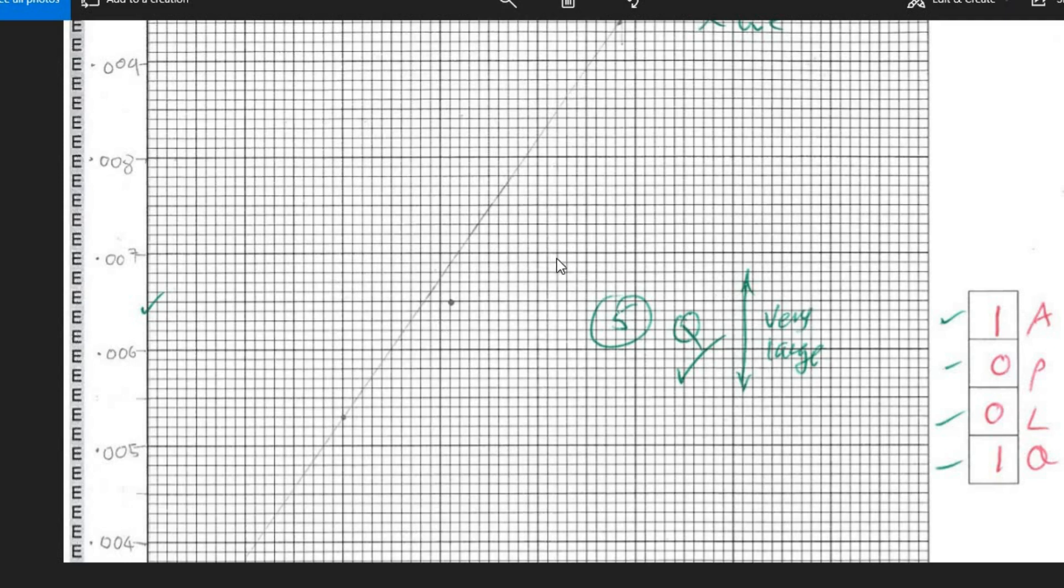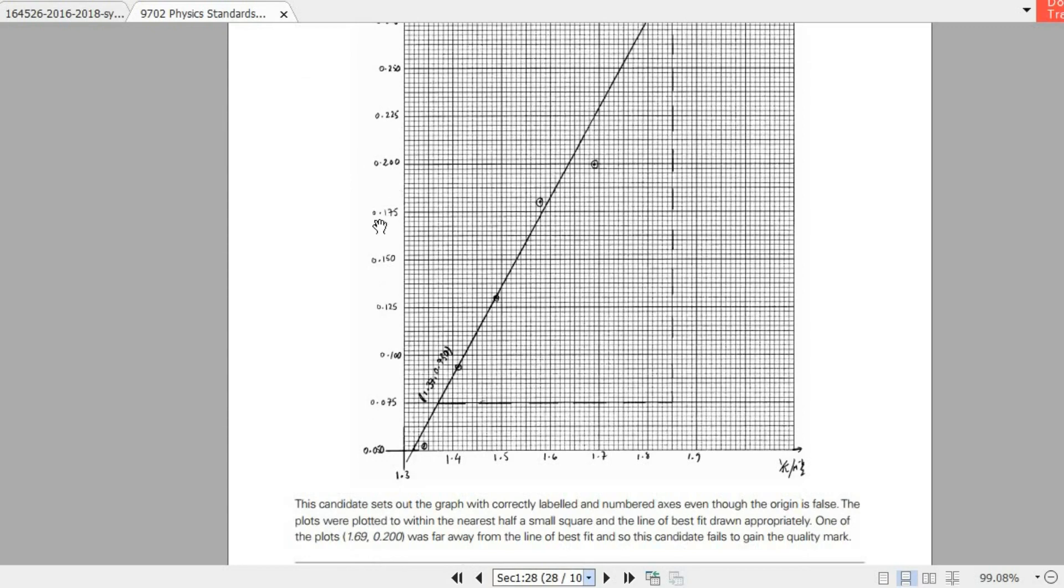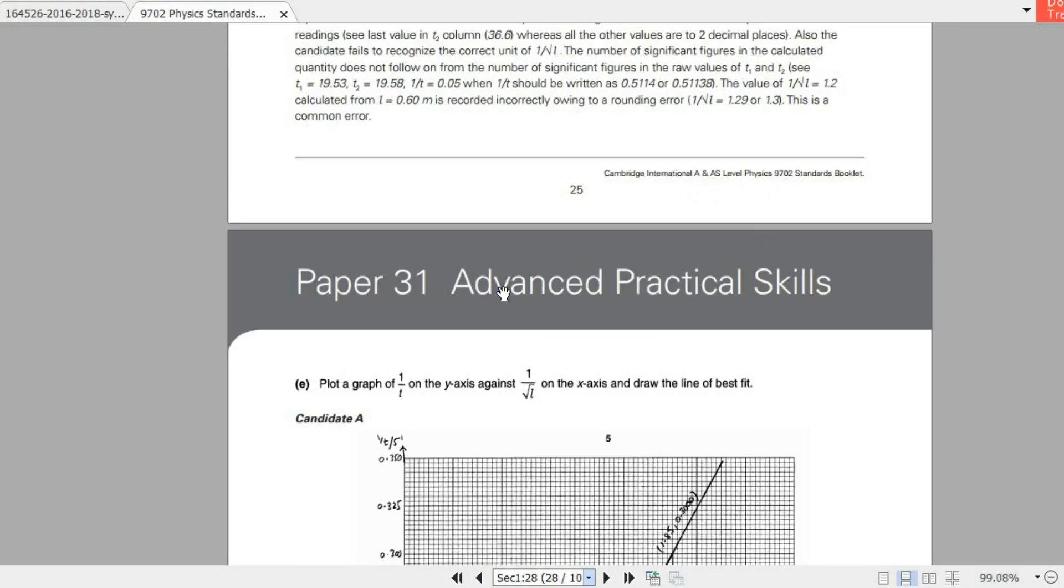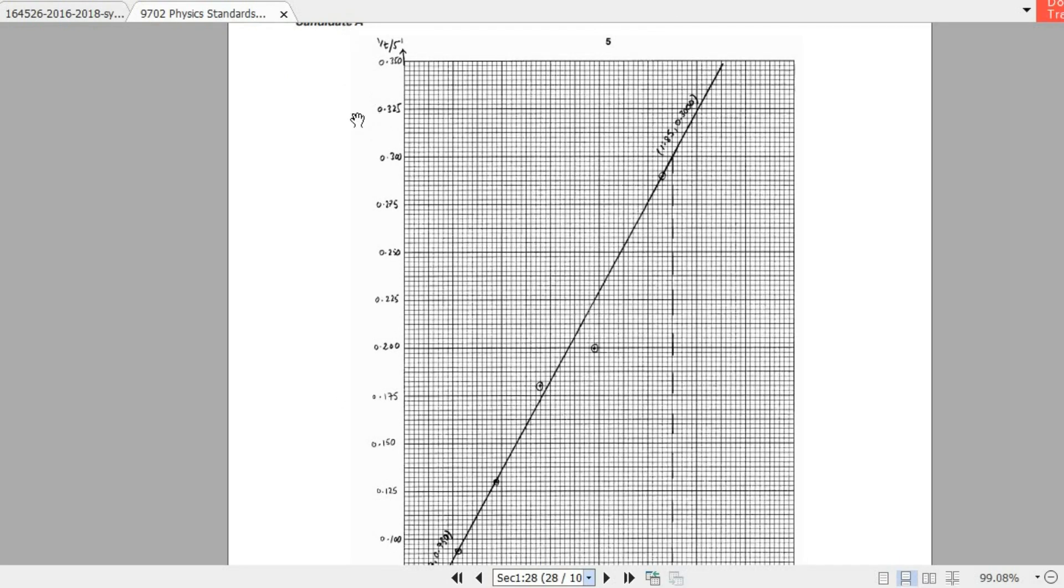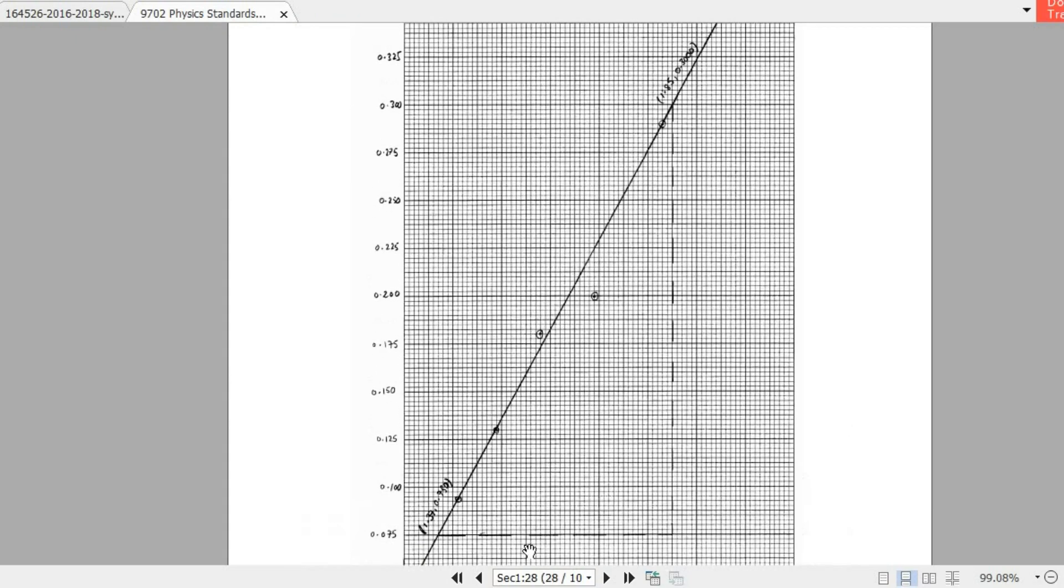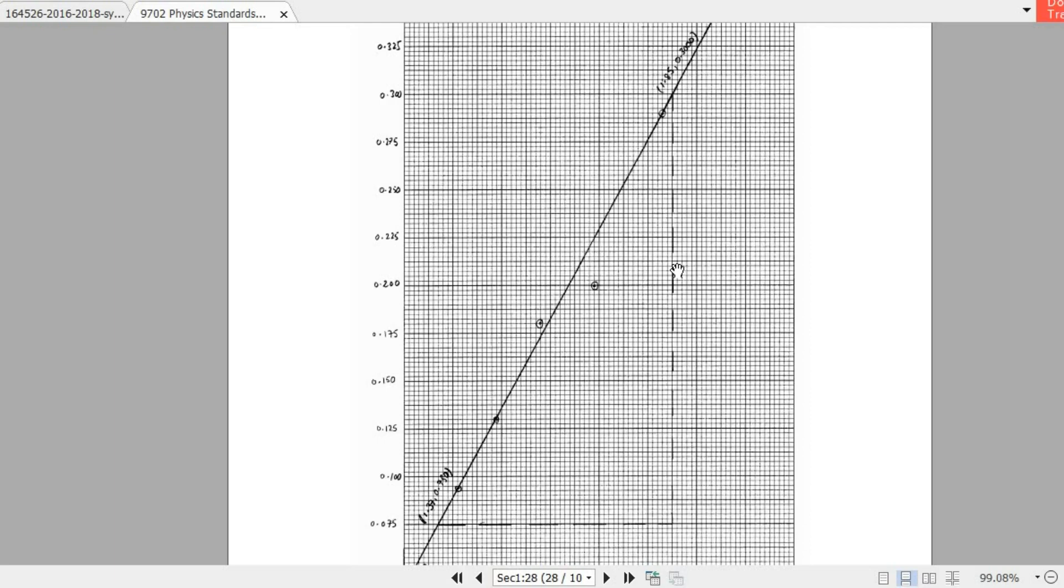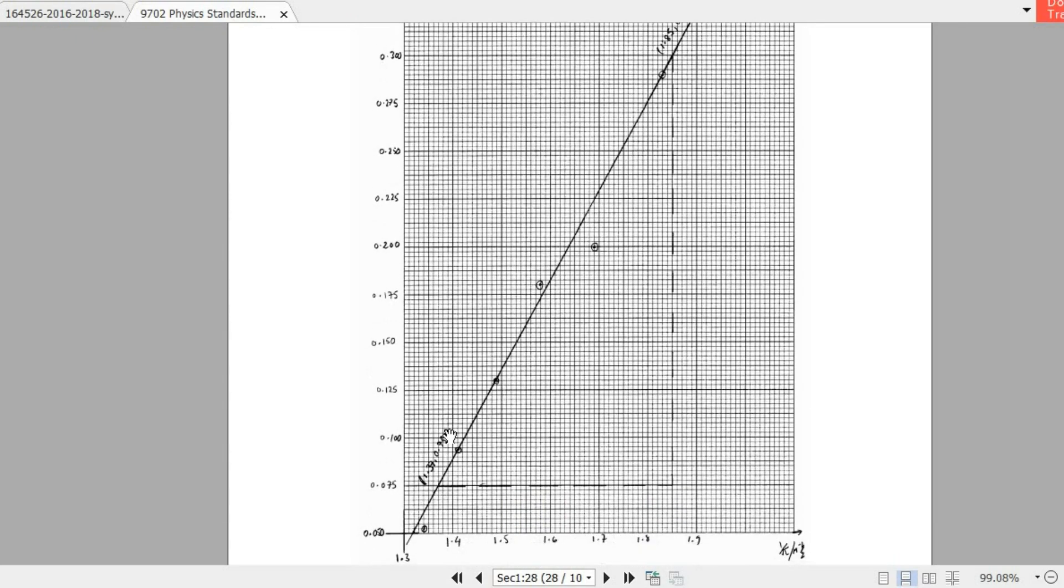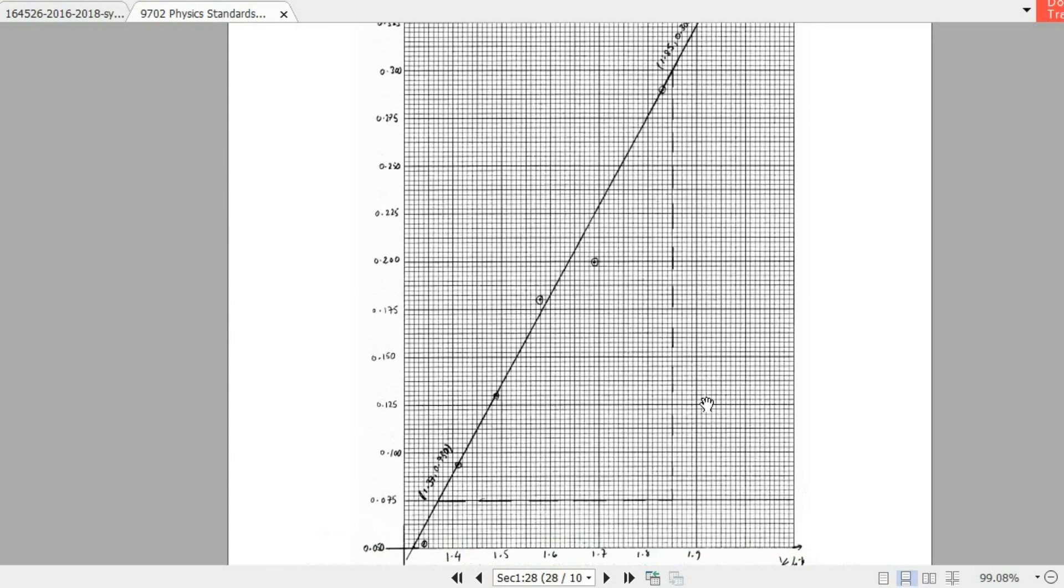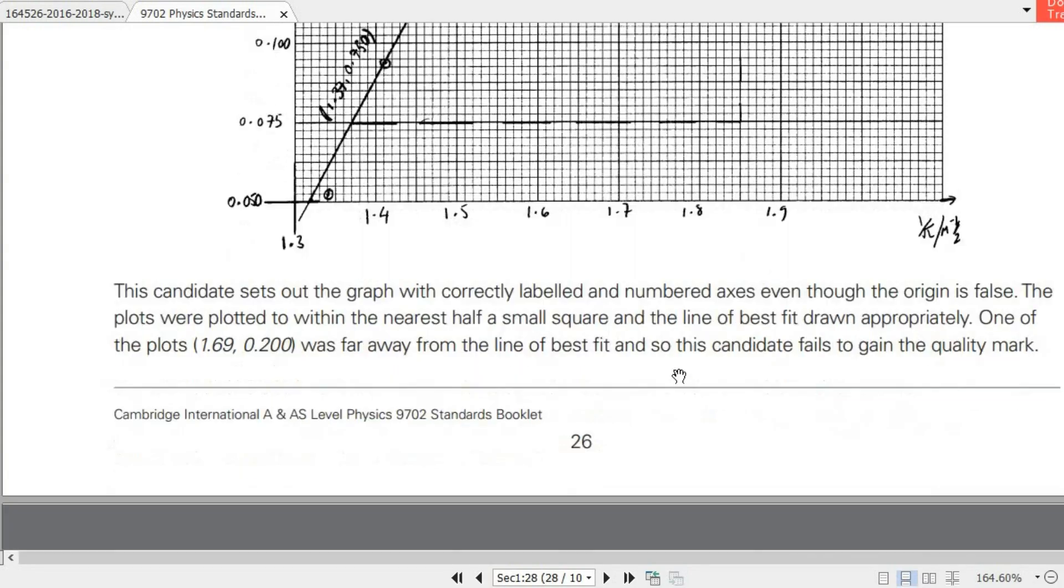There's this Cambridge Standards Booklet where they actually represent students of good graphs and good standards. It's called the Cambridge International AS A-level Physics Standards Booklet. So here they've given examples of an A-grade candidate. This is an A-grade graph. Look at the scale. It's pretty decent. You have the values labeled, the units labeled very nicely. You have a sharp line, more or less sharp, straight. I strongly suggest you use a transparent 12-inch plastic scale. You can see there's an equal scatter above and below the line.